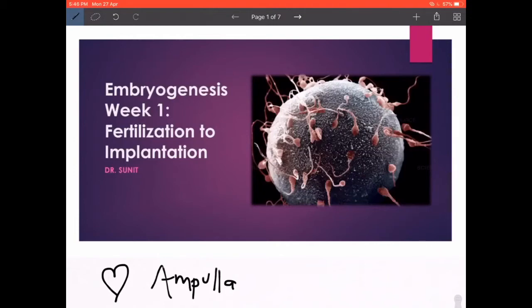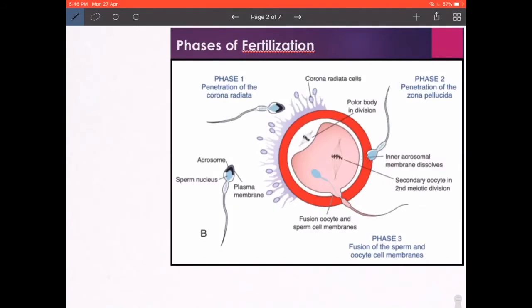We already saw that the sperms had left from the seminiferous tubules and reached the epididymis, and that is where they gain motility. As they traverse further into the male genital tract, secretions are added from the prostate, seminal vesicles and the bulbo-urethral glands, which help in making the sperm more viable and giving it energy. During coitus, it enters through the vaginal canal into the cervix. Out of about 200 to 300 million sperms released, about 300 to 500 eventually reach the ampullary end of the uterine tube.